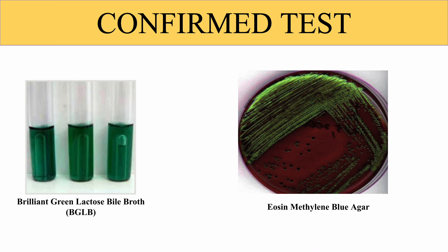E. coli colonies are small and have a green metallic sheen, whereas E. aerogenes form large pinkish colonies. If only E. coli, or both E. coli and E. aerogenes appear on the EMB plate, the test is considered positive. If only E. aerogenes appears on the EMB plate, the test is considered negative. The reason for these interpretations is that E. coli is an indicator of fecal contamination since it is not normally found in water or soil, whereas E. aerogenes is widely distributed in nature outside of the intestinal tract.